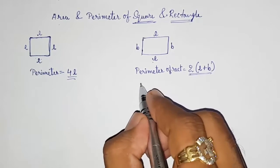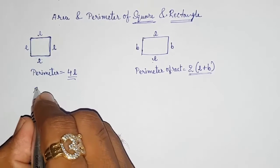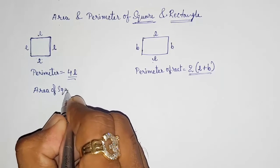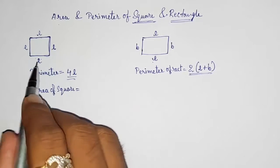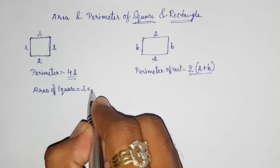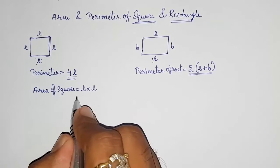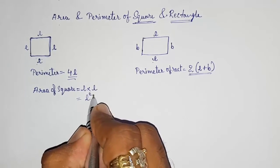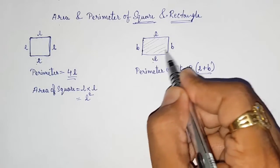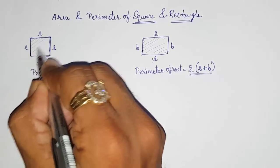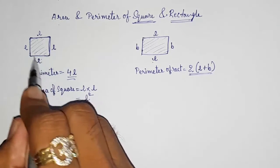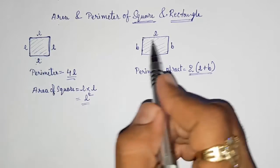Now for finding the area of rectangle and square — area of square is length into breadth, but here length and breadth are the same, so we write length into length, or length squared. Area means the inner part. Directly, length into length or length squared gives you the area of the square.